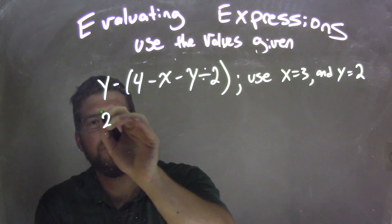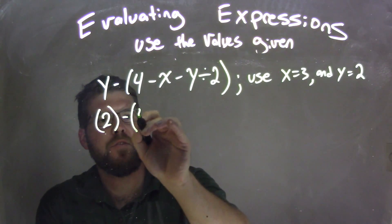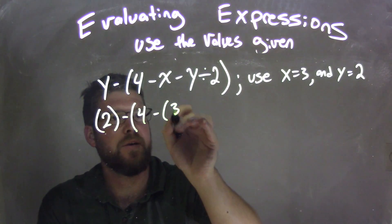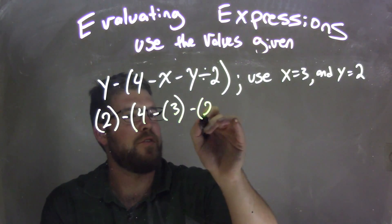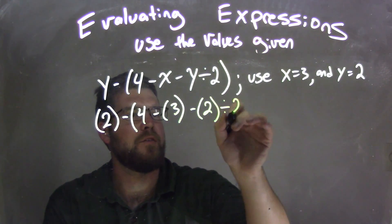So y, we see is a 2, minus parentheses 4 minus x, which is 3, minus y is 2, divided by 2.